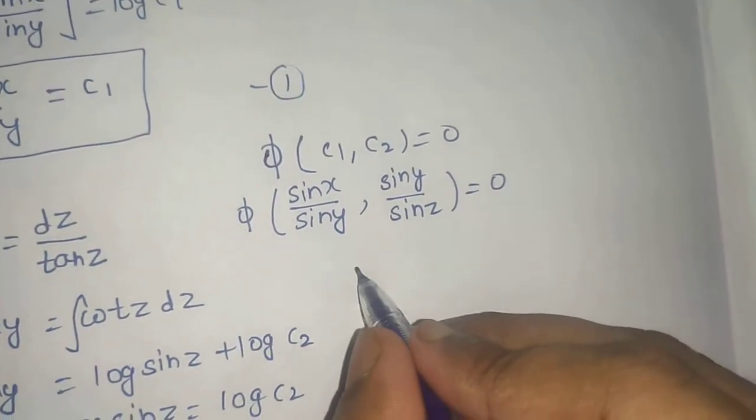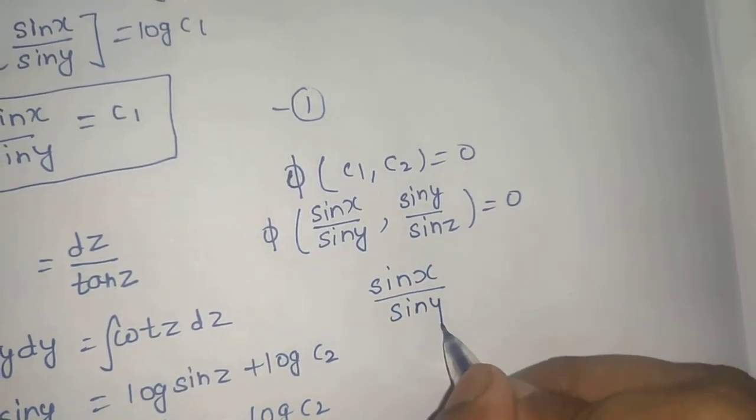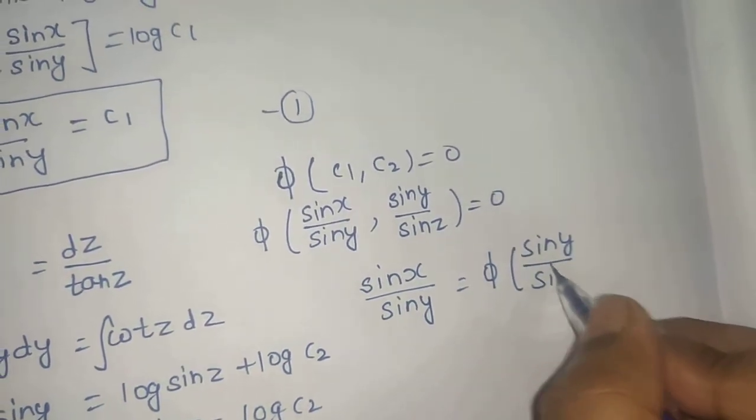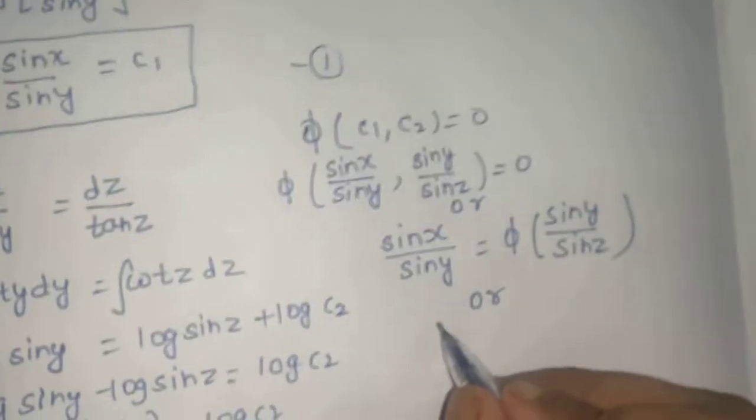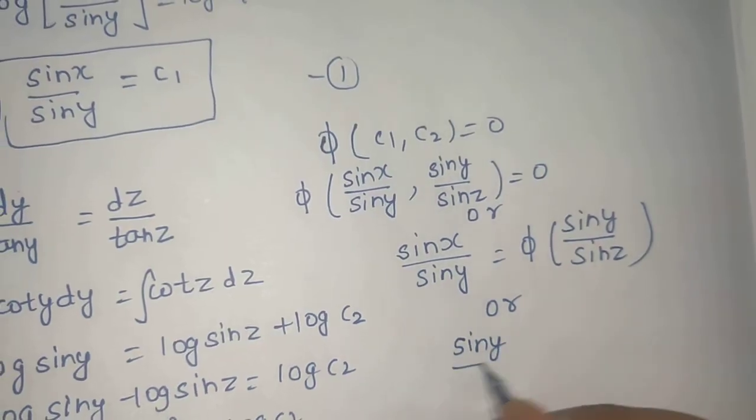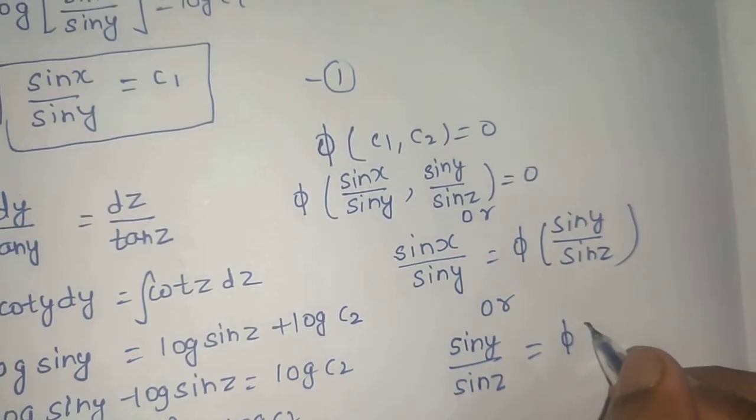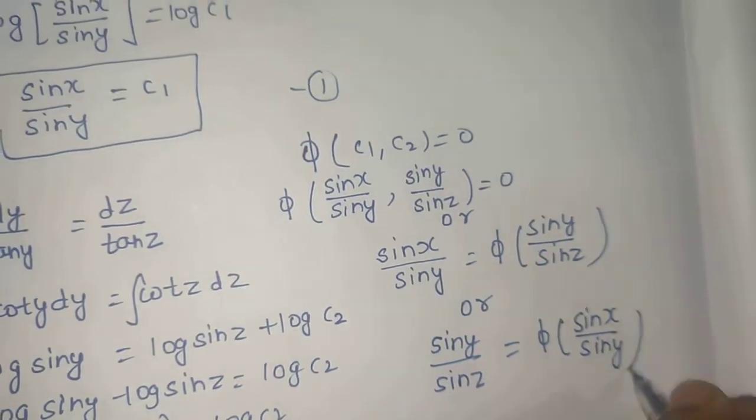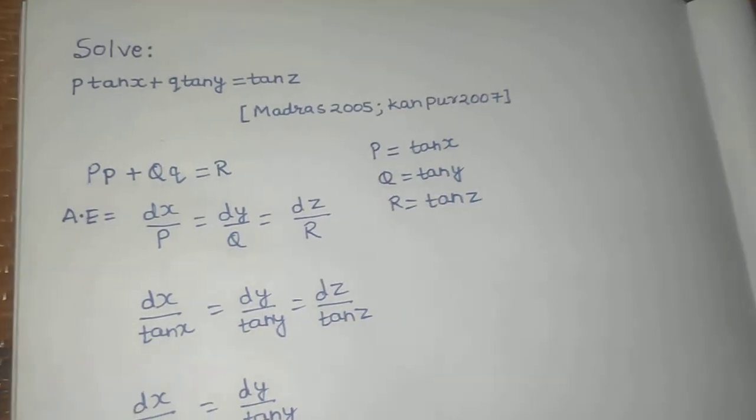You can also write it in this way: sin x by sin y equals to phi of sin y by sin z. These are different ways to write the same answer. You can also write sin z by sin y equals to phi of sin x by sin y.